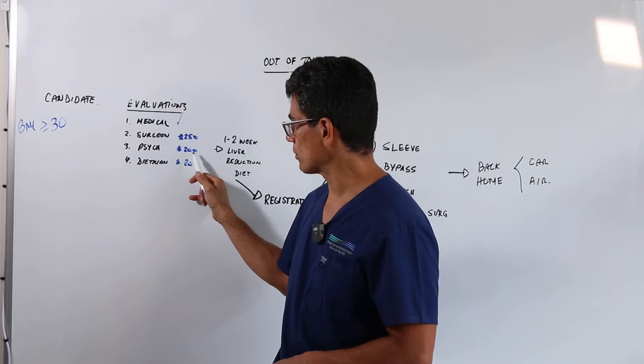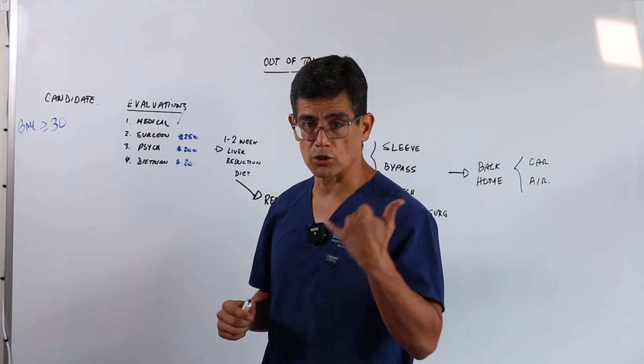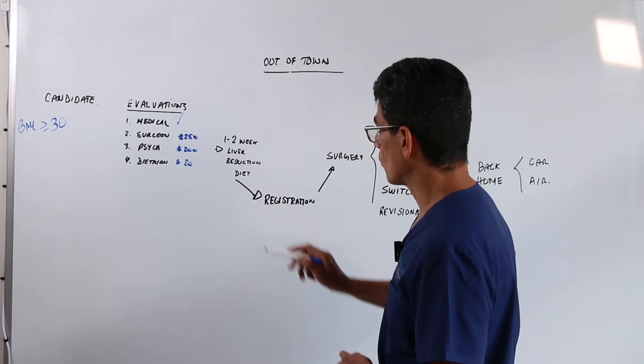Here in the U.S., you must have a psychology evaluation before the surgery. You can use your insurance for that, or you can also do it, and it starts at $200 on the phone. The last thing you need is a dietician evaluation, which is $80.